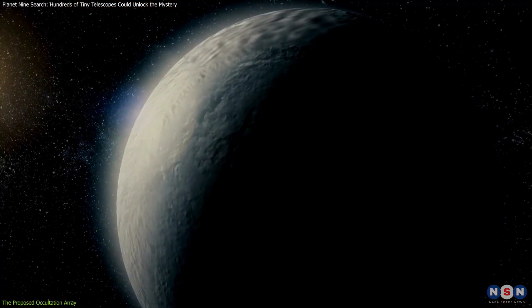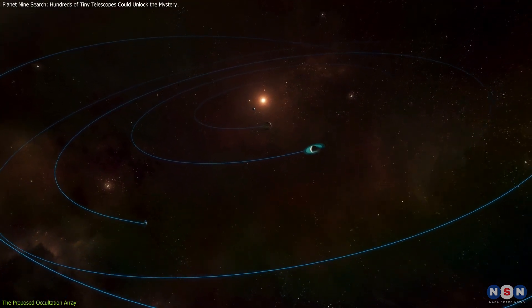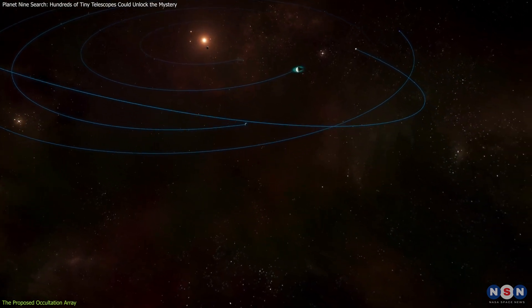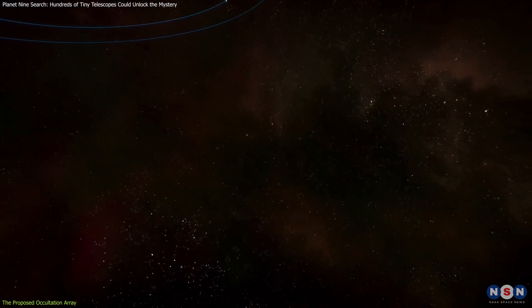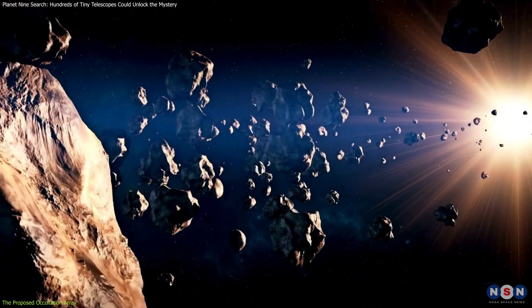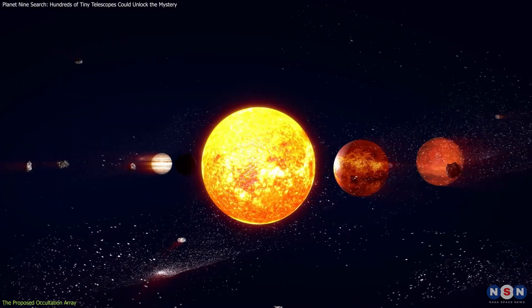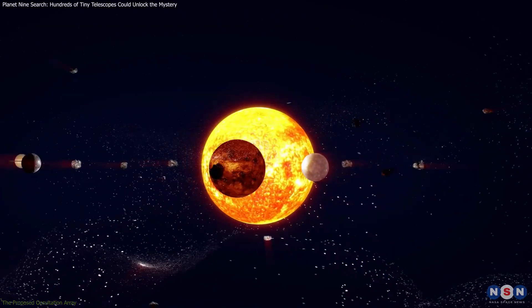This proposal is not just about Planet 9. Its broader purpose is to enhance our understanding of the solar system's outer regions. Additionally, studying how sunlight alters the paths of these small bodies through effects like the Yarkovsky effect could refine our models of orbital dynamics and solar system evolution.